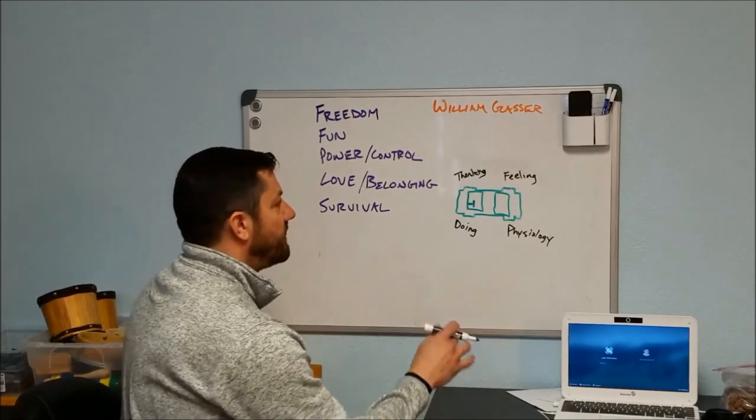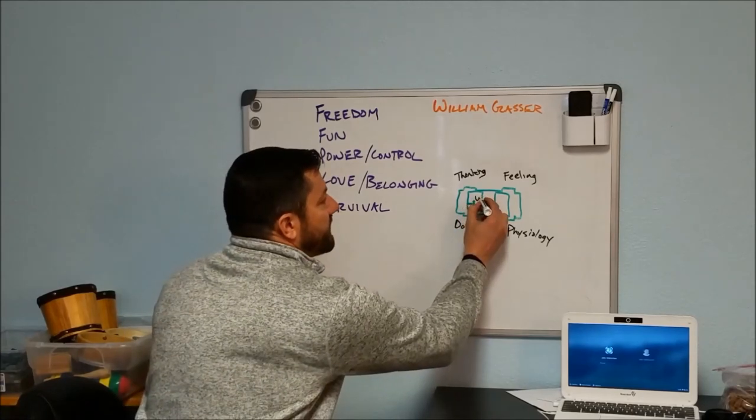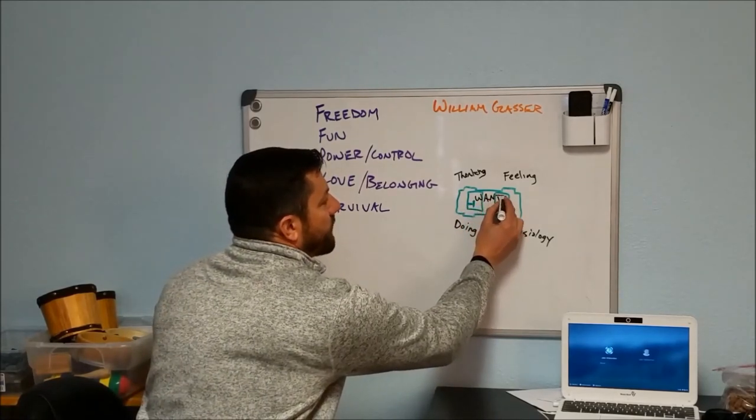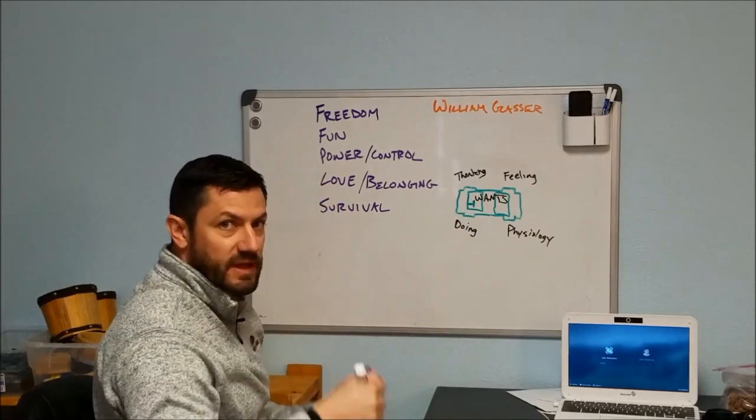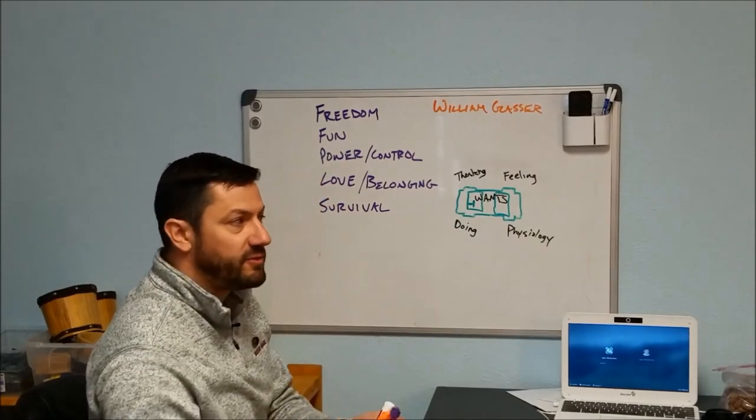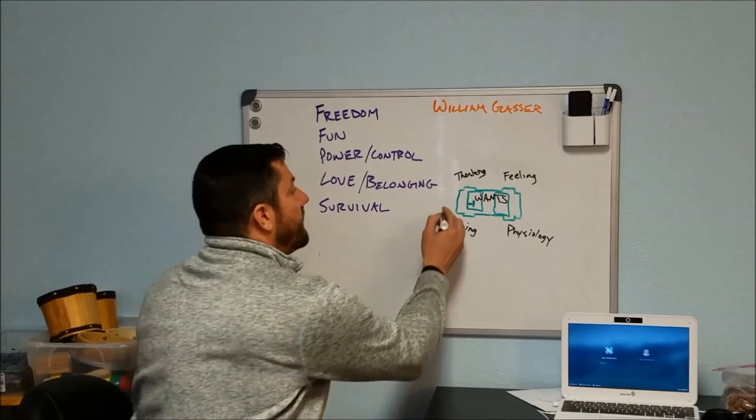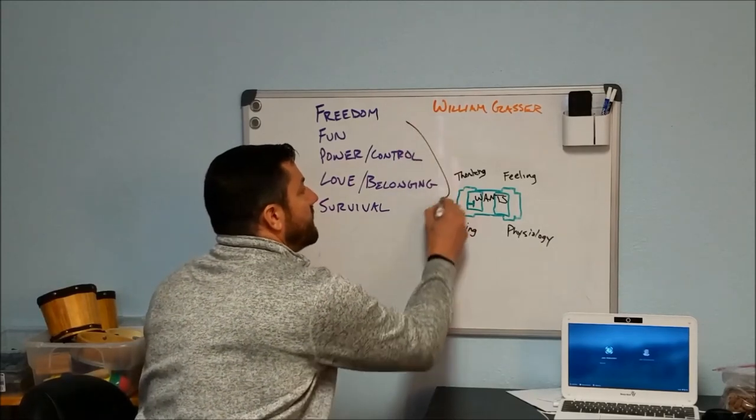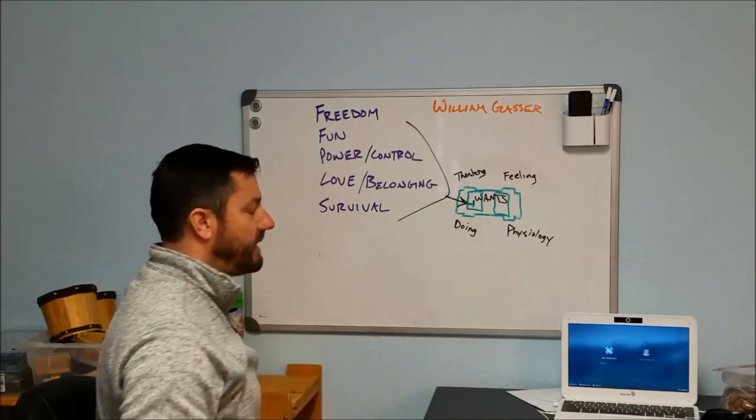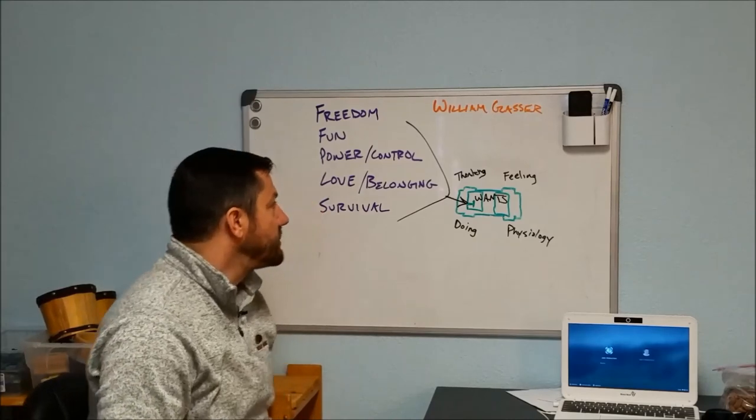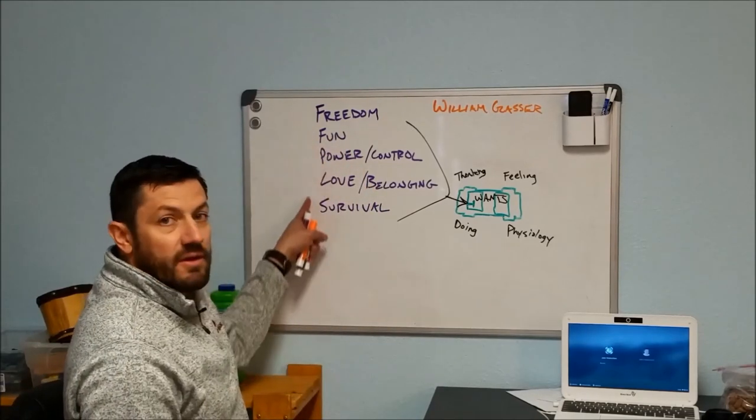But we always have a choice. So we have a choice over thinking and doing, which are the front tires, and then the feeling and physiology we have less control over. The steering wheel can be said to be our wants. What do you want? That steers your car, it drives you to wherever you need to go.